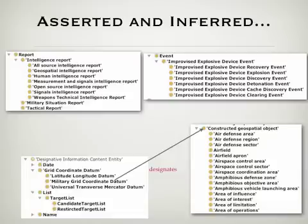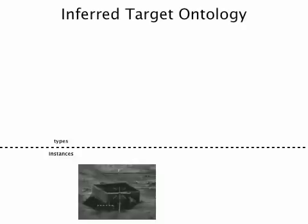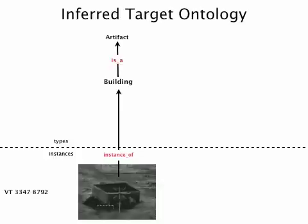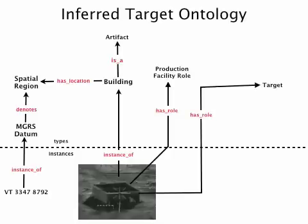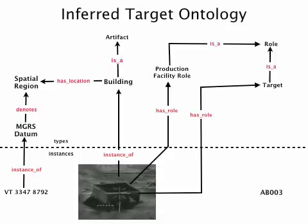Let's look at one more sample of an inferred ontology. Here we see an instance of a building, which is part of the artifact ontology. This text string is an instance of a military grid reference grid coordinate, which denotes some spatial region where some building is located. The building is in a production facility role, as well as a target role, which are both part of the role ontology. And this text string is an instance of a target number, which denotes some target role.